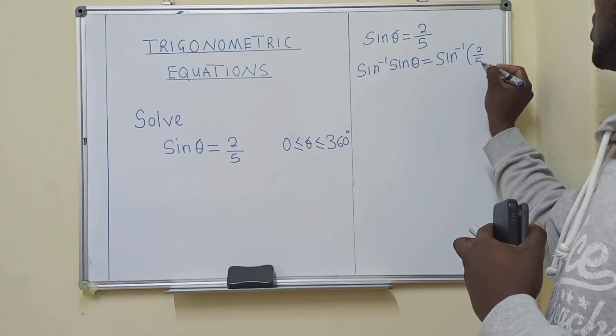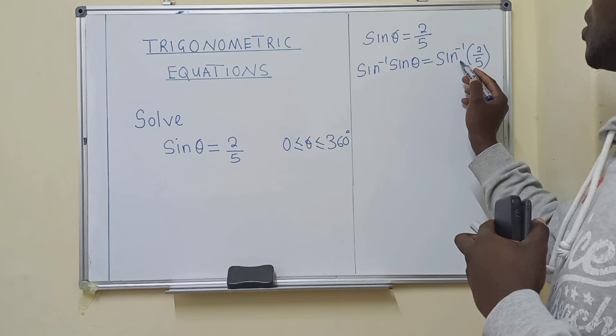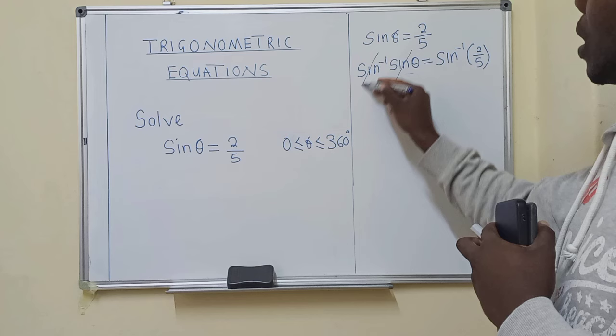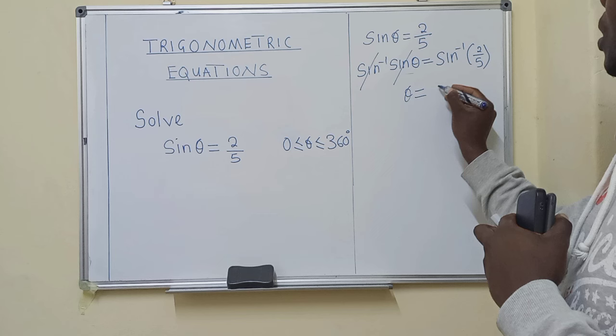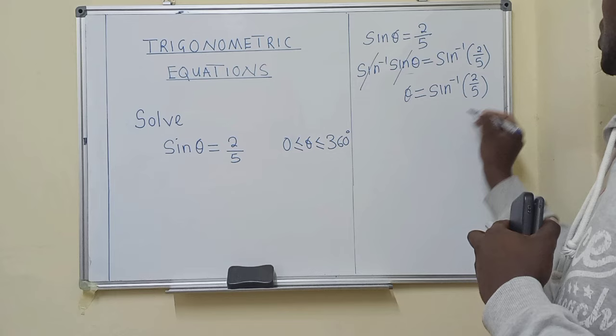There was just a constant, but I've applied the sine inverse on both sides. So meaning, this sine and sine inverse will cancel. We will just remain with theta. The other side, we have sine inverse of 2 over 5. So thereafter, we can solve for theta.